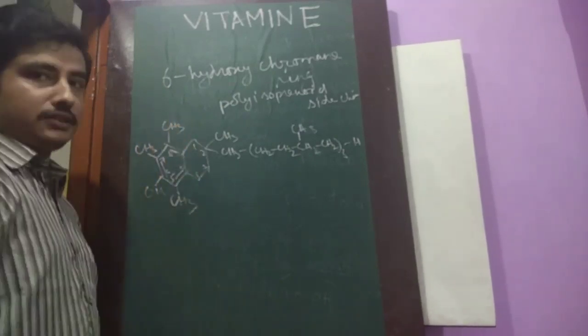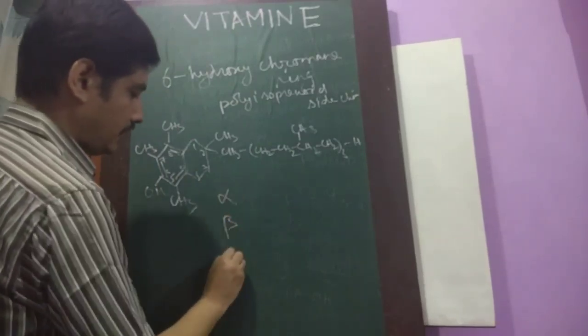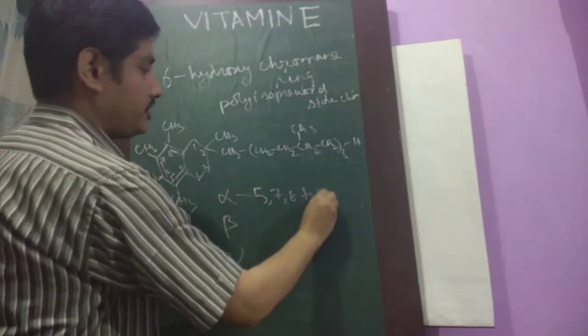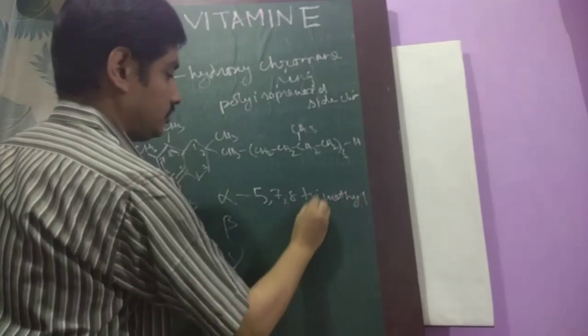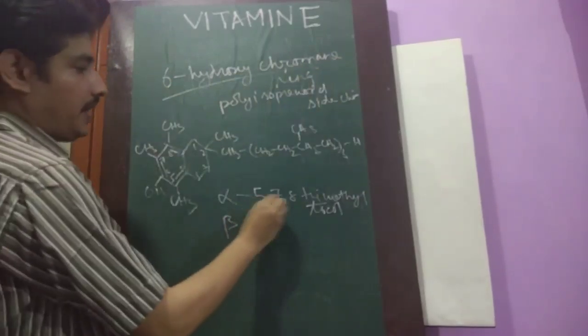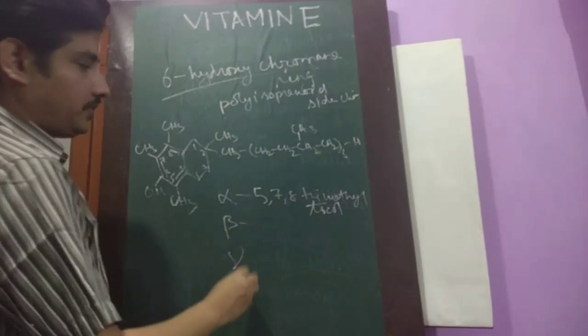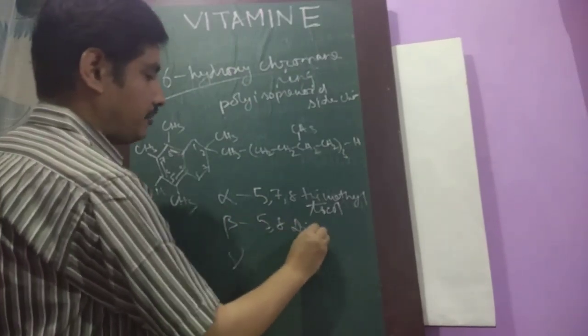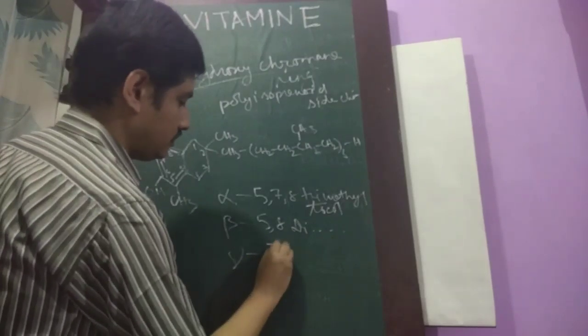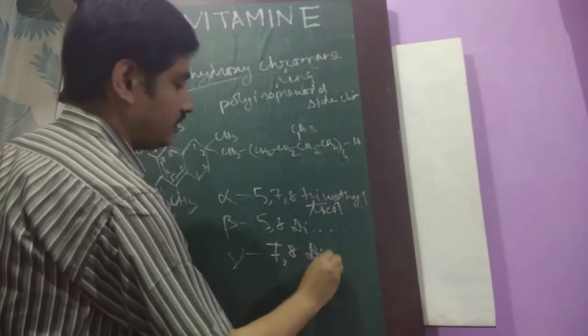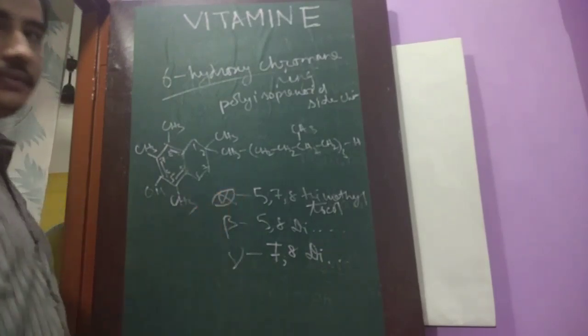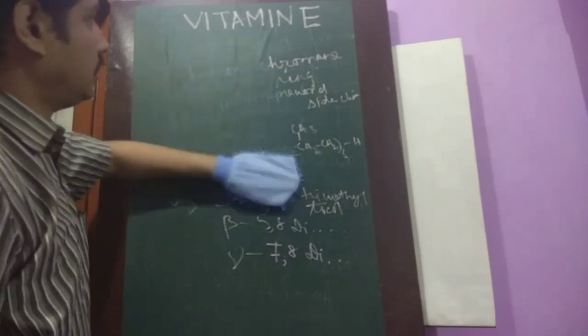So tocopherol consists of three types: alpha tocopherol, beta tocopherol, and gamma tocopherol. Alpha tocopherol is 5,7,8 trimethyl tocol ring. Tocol, as 6-hydroxychromene ring, is also known as tocol ring. Beta tocopherol is 5,8 dimethyl tocol and gamma tocopherol is 7,8 dimethyl tocol. Among these tocopherols, alpha tocopherol is the most active and abundant vitamin E.